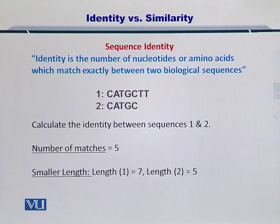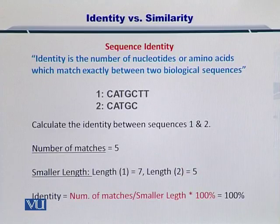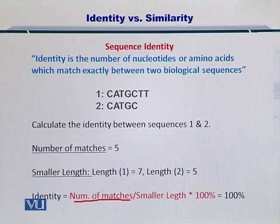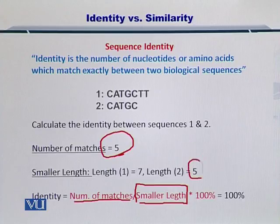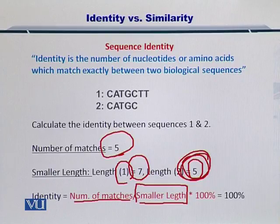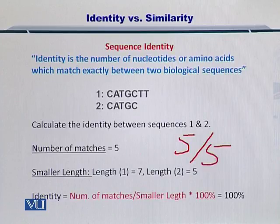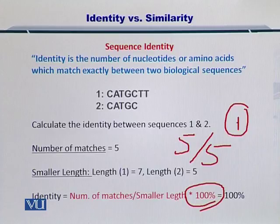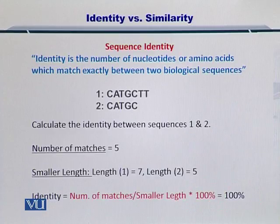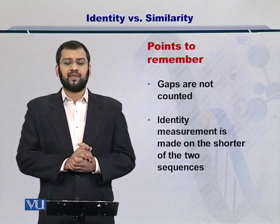You are supposed to pick the smaller length, so you will select five. Next, apply the formula: identity equals the number of matches — that is five — divided by the smaller length, which is five. So you have five over five, and converting to a percent, five over five equals one, and one times one hundred percent is one hundred percent. So these two sequences are 100% identical.